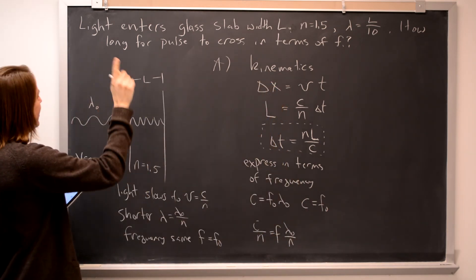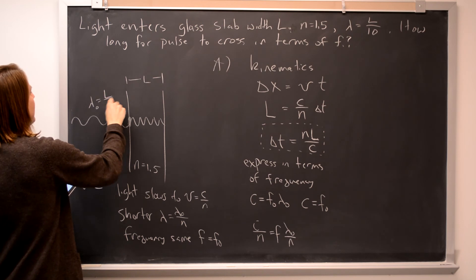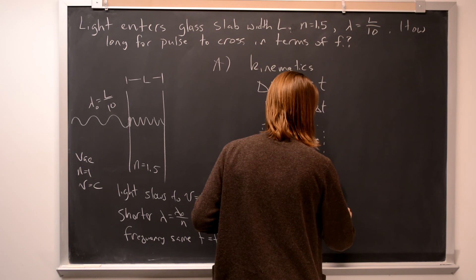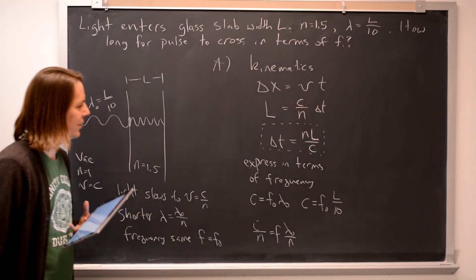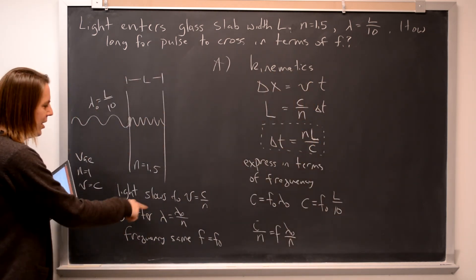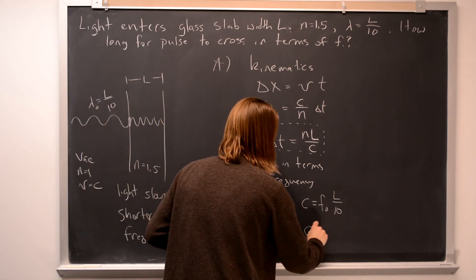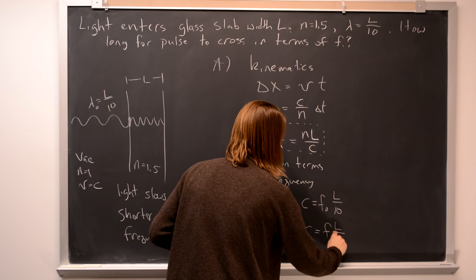C equals F. So here we're going to use this one. C equals F naught times lambda naught. And we were told, there it is, is L over 10. We're given the vacuum wavelength. So F naught times L over 10, like that. And we know that F equals F naught. That's what we're going to use. Forget about this. Forget about that. So we go C equals F times L over 10.